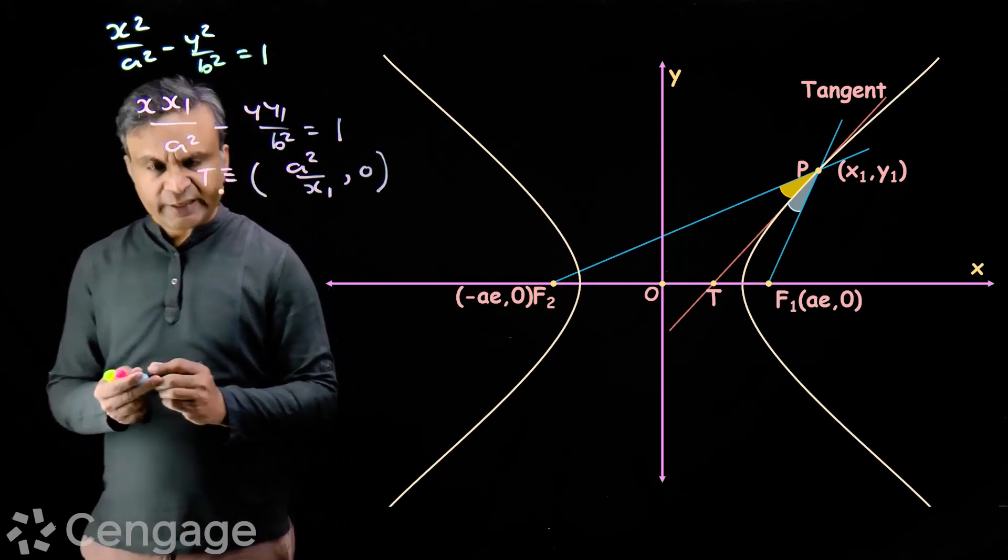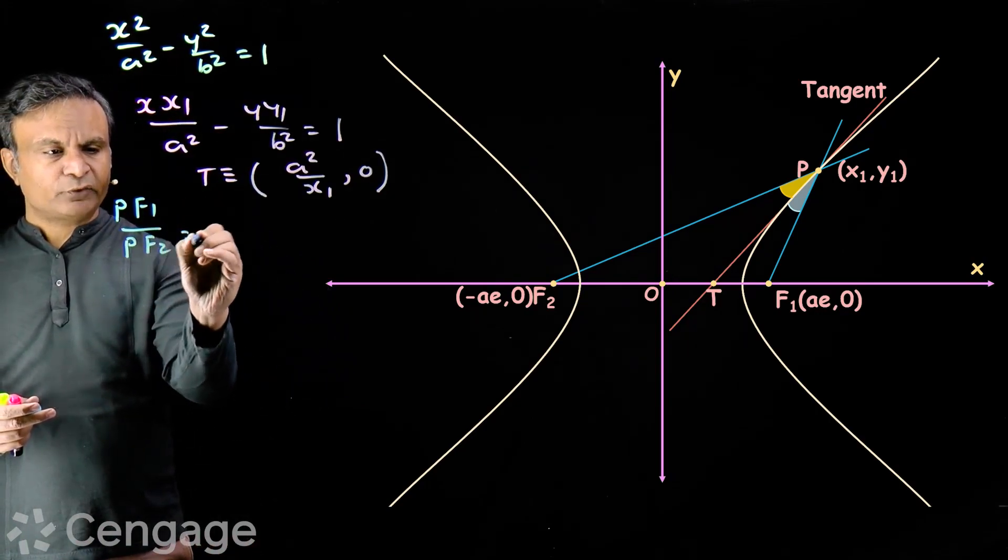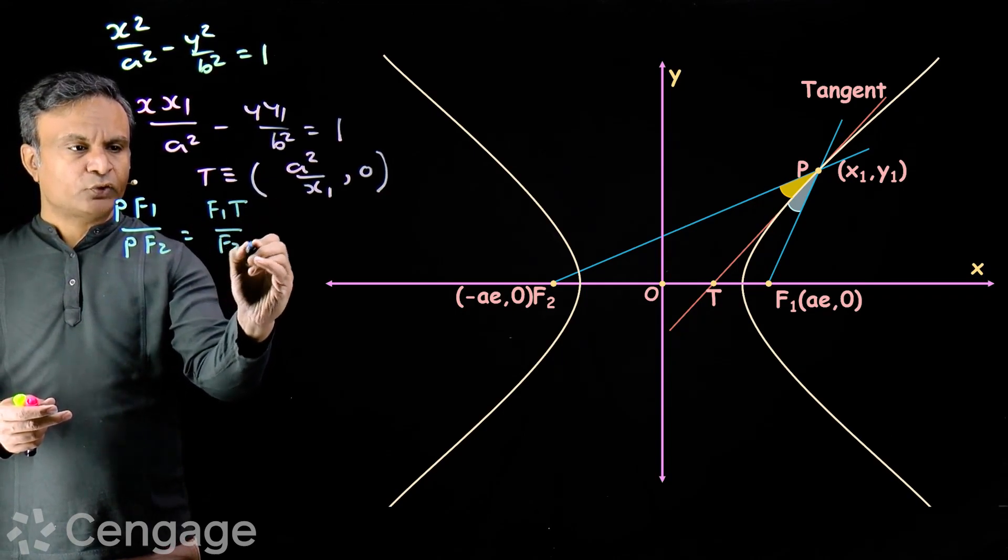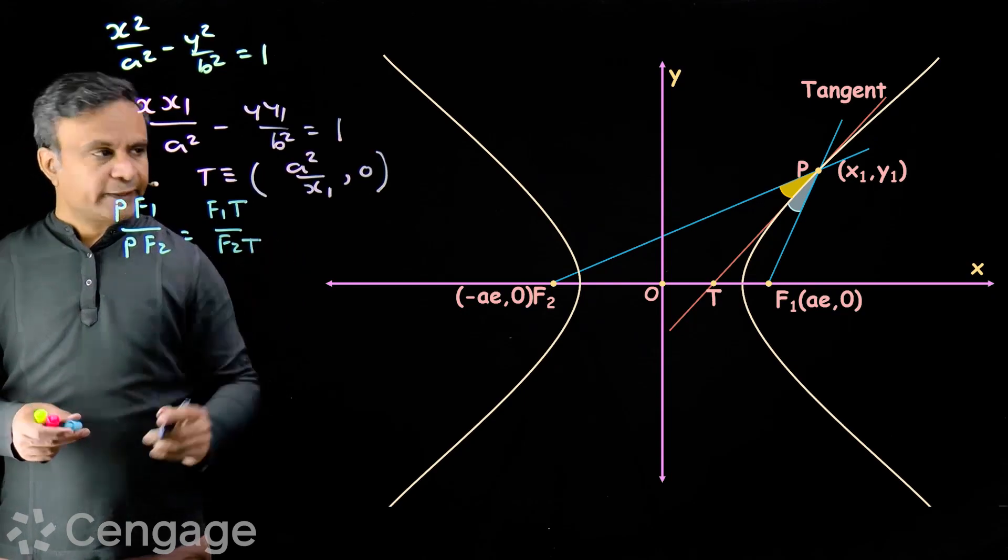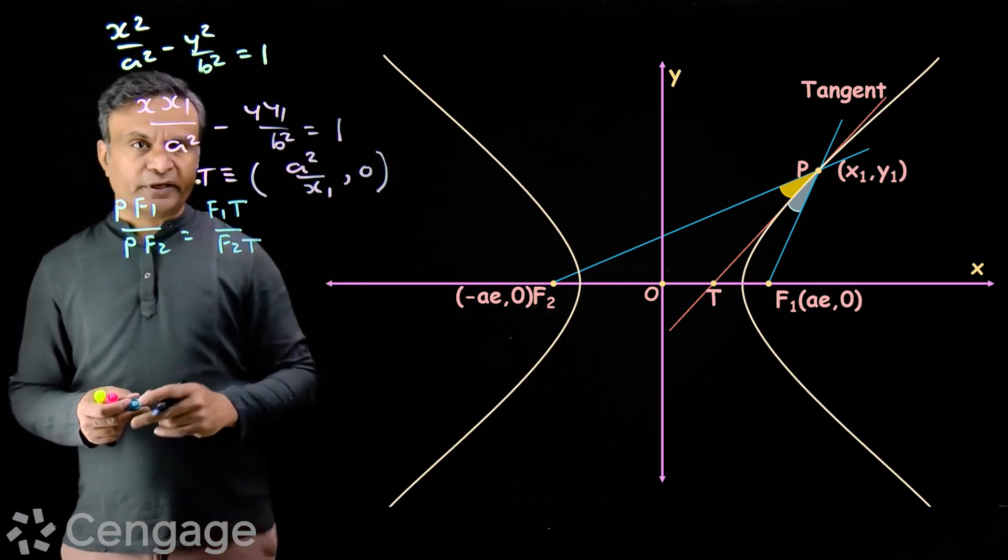If we prove that PF1 over PF2 is equal to F1T over F2T, then tangent will bisect angle F1PF2.